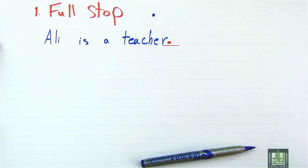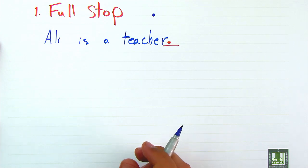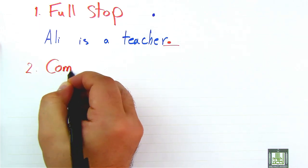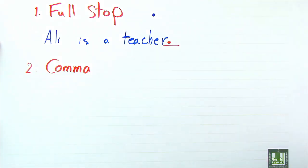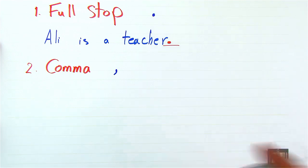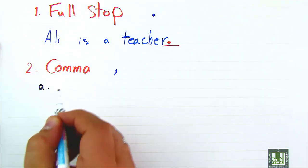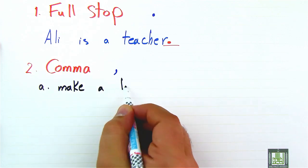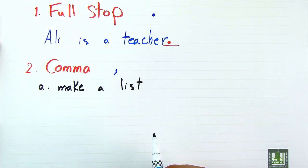So full stop is used to indicate the end of the sentence. Number two is comma. Comma is used to make a list.